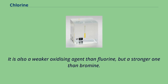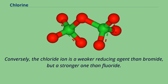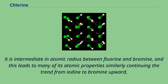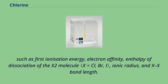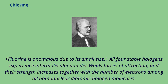Chlorine is also a weaker oxidizing agent than fluorine, but a stronger one than bromine. Conversely, the chloride ion is a weaker reducing agent than bromide, but a stronger one than fluoride. It is intermediate in atomic radius between fluorine and bromine, and this leads to many of its atomic properties similarly continuing the trend from iodine to bromine upward, such as first ionization energy, electron affinity, enthalpy of dissociation of the X₂ molecule, ionic radius, and X-X bond length. All four stable halogens experience intermolecular van der Waals forces of attraction, and their strength increases together with the number of electrons among all homonuclear diatomic halogen molecules.